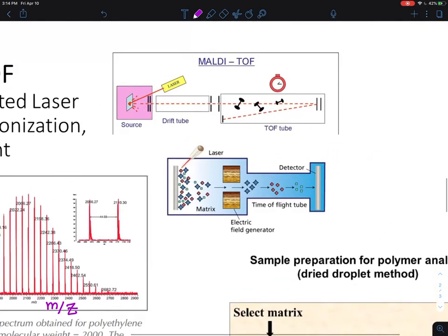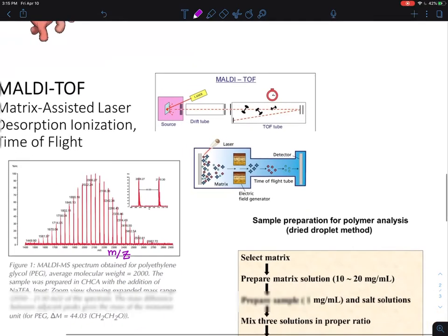By shining the laser, things are vaporized and assisted by the matrix and different cationizing agents. Heavier ones versus lighter ones have different times to fly. This is called reflection mode, making the molecules pass twice, which enhances separation and gives better resolution.